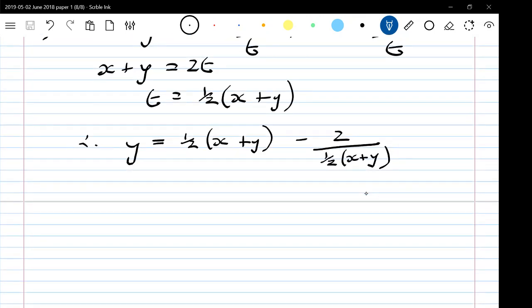So I'm going to have to deal with this at this point. Let's simplify this a little bit. Y is x plus y over 2 minus 4 over x plus y. Because it's 2 divided by half gives us the 4.